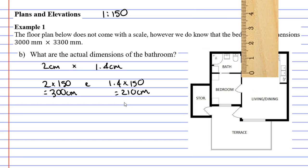Because it's a floor plan we want to leave everything in millimeters. We need to just add a zero on: 3,000 millimeters and 2,100 millimeters. Therefore the dimensions of the bathroom are 3,000 millimeters by 2,100 millimeters.